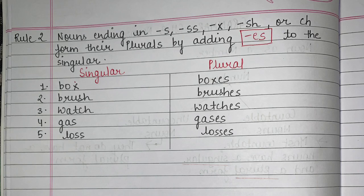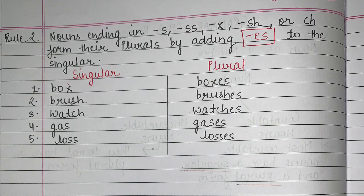Rule number two: nouns ending in 's,' 'ss,' 'x,' 'sh,' or 'ch' form their plurals by adding 'es' to the singular. So if I want to change any singular noun into plural and it ends with one of those letters, I add 'es' at the end. For example: box — 'x' is at the end, so I add 'es' and it becomes 'boxes.' In singular it ends in 'x,' and in plural I have added 'es.'